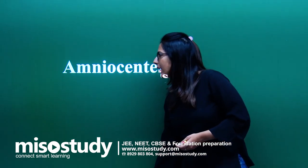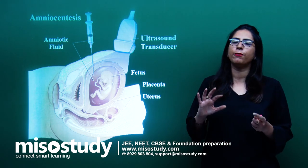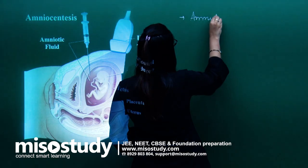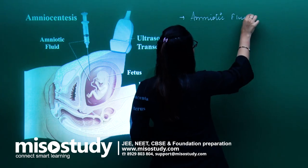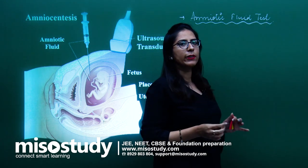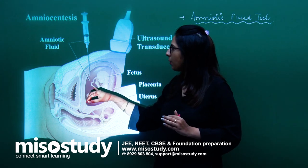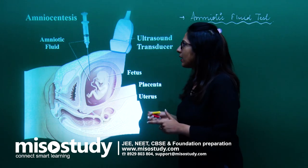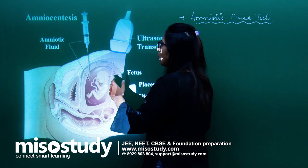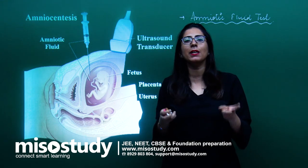The first procedure is amniocentesis. Amniocentesis is the procedure in which amniotic fluid is taken out. That is the reason this particular test is also termed as the amniotic fluid test. Amniotic fluid is the fluid in which the baby is present. The baby is connected to the mother via the placenta. We take a syringe which is allowed to pass through the abdomen of the mother, along with ultrasound transducers, so that the exact location of the baby can be simultaneously detected.